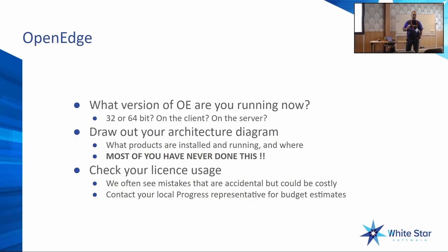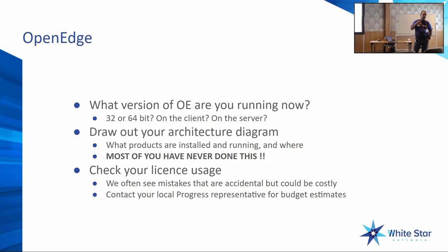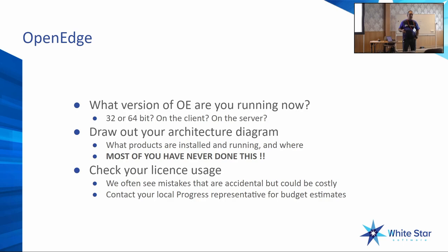Now is the time to check your license usage. Check what's installed on each server — people tend to just install all licenses on all servers and end up in license violation. Make sure whatever you've installed is actually licensed for that particular server, and count how many licenses you're using. If you only have a 75-user or 750-user license but you know you're running 1,100 users, it's a good time to budget for the additional licenses as part of the larger migration project.